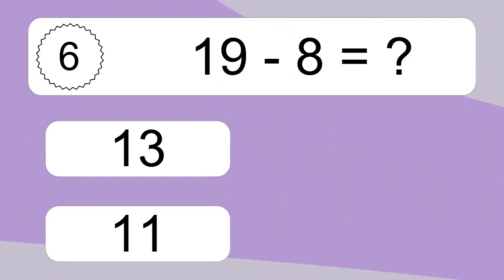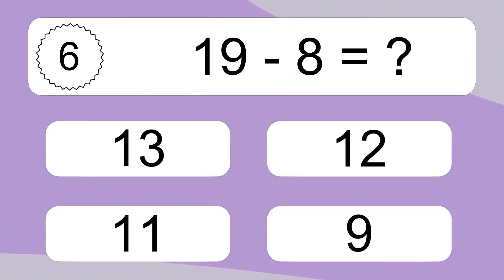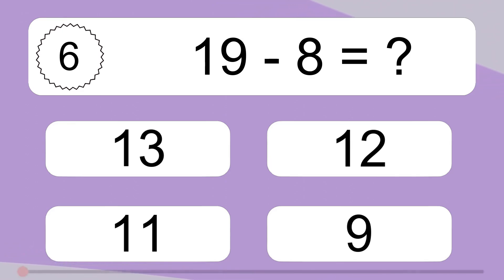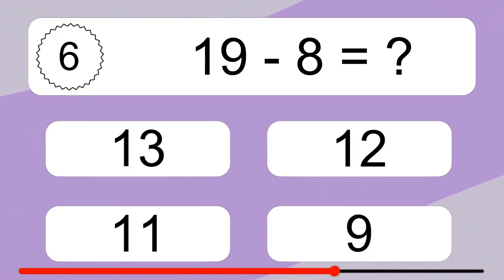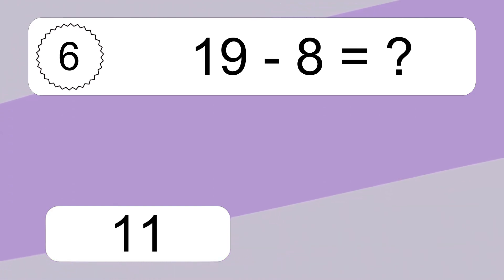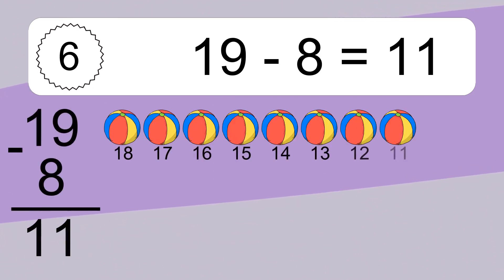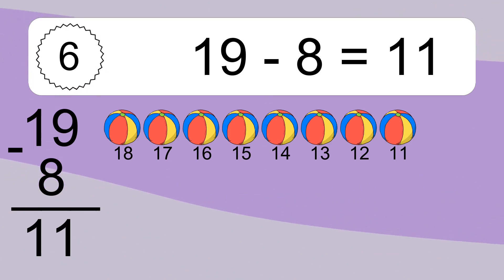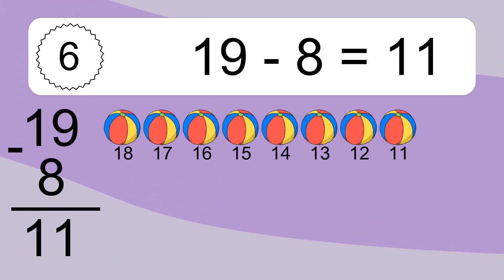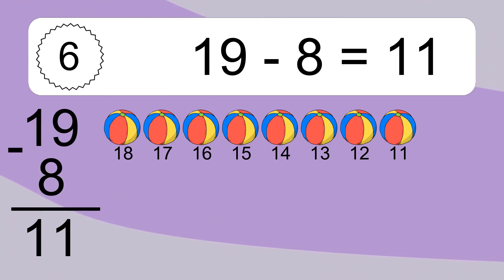19 minus 8 equals what? 19 minus 8 equals 11. Let's count it: 18, 17, 16, 15, 14, 13, 12, 11.